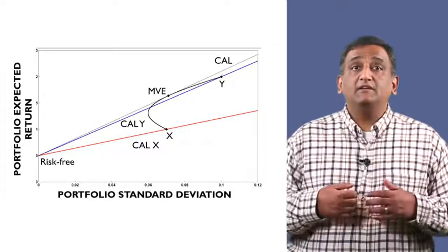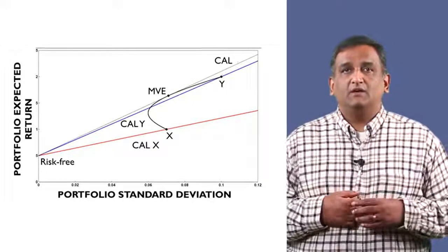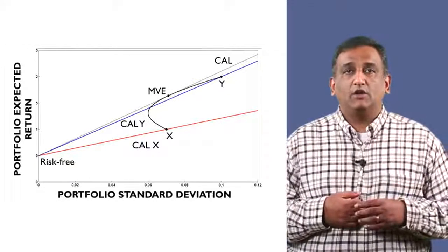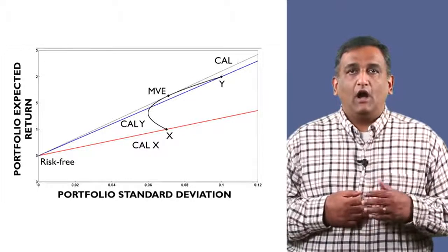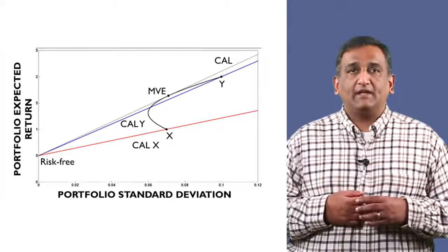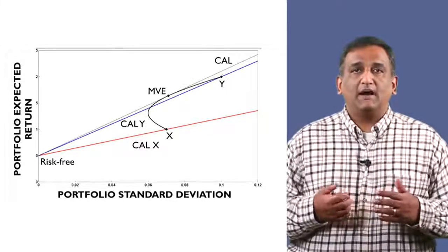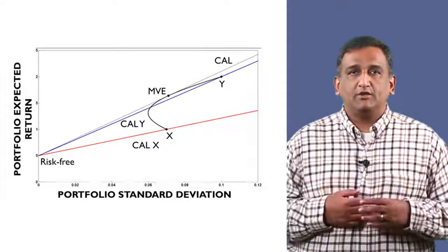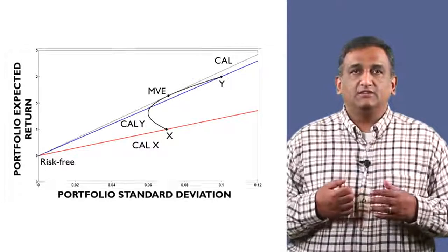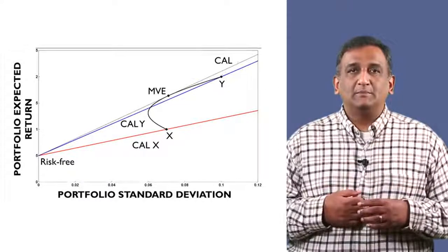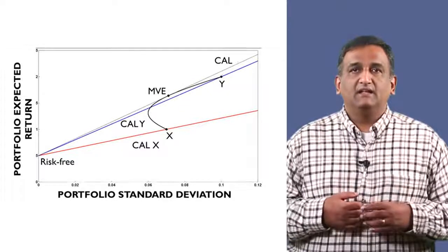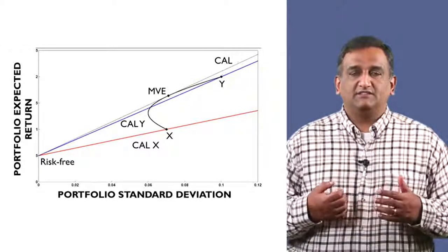Can we do even better than this? Remember, we want to keep moving towards the top left as part of being non-satiated. However, the answer is no — the capital allocation line would no longer pass through or touch any point on the mean variance frontier. Increasing the slope any further would simply lead us to risk-return combinations that are infeasible given X, Y, and the risk-free asset.